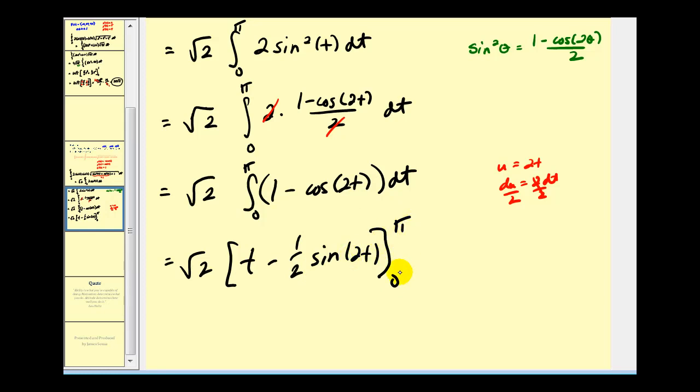Now go ahead and replace t with pi and then zero. When t is pi, we'll have pi minus, the sine of two pi is zero. Minus, and then when t is zero, these are both zero again.